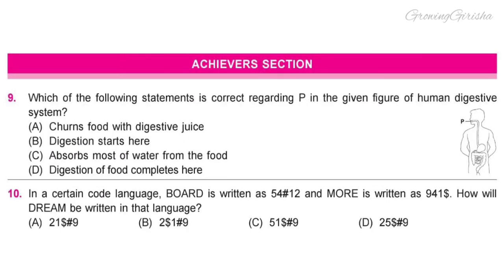Question 9 (Achievers Section). Which of the following statements is correct regarding P in the given figure of the human digestive system? Option B: Digestion starts here.